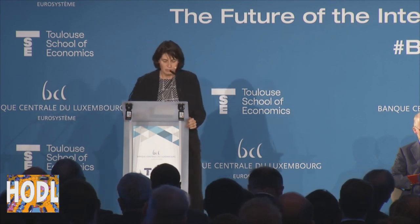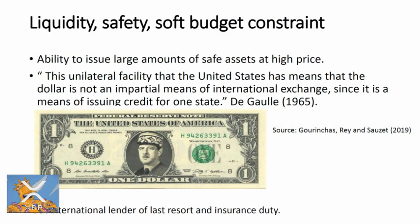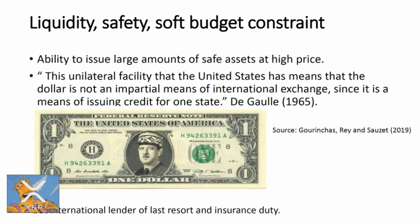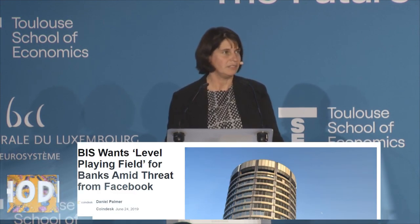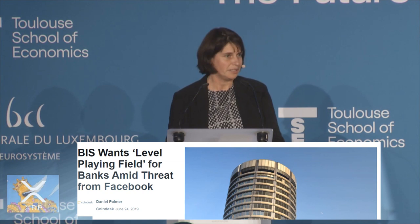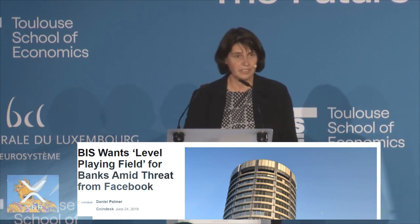To quote de Gaulle: "This unilateral facility that the United States has means that the dollar is not an impartial means of international exchange, since it is a means of issuing credit for one state." In other words, because of all these properties of the dollar and people wanting dollars, the budget constraint of the US as a country is relatively soft — and this is a great advantage.